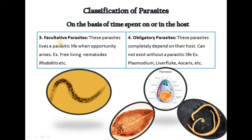The third type is facultative parasites, which lead a parasitic life only when the opportunity arises. An example is the free-living nematode Rhabditis. The fourth type is obligatory parasites, which completely depend on their host and cannot exist without a parasitic life. Examples include Plasmodium, liver fluke, and Ascaris.